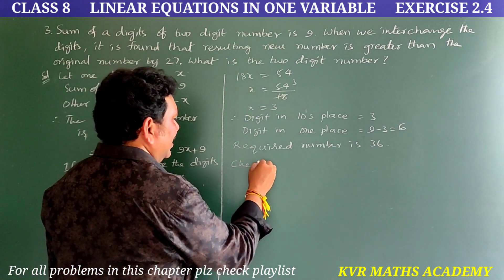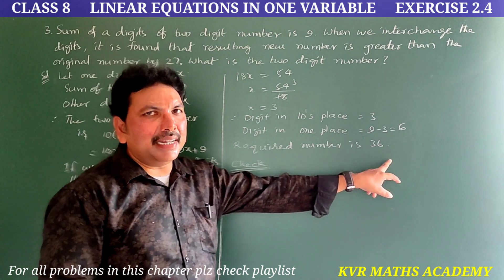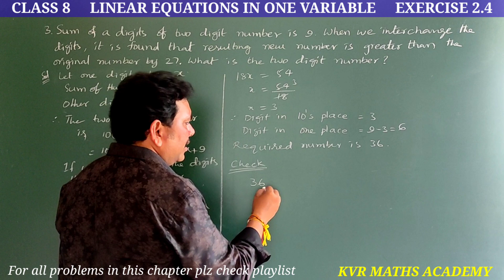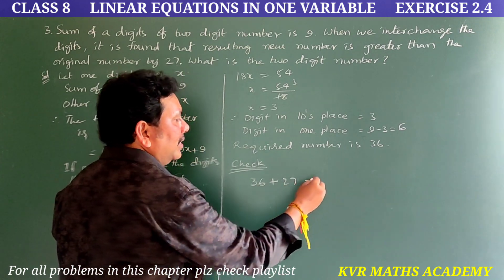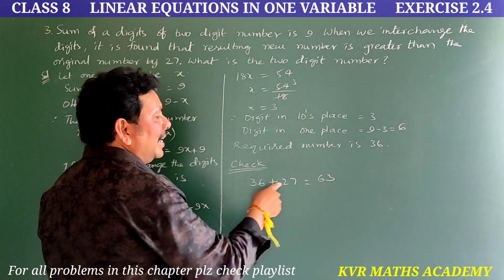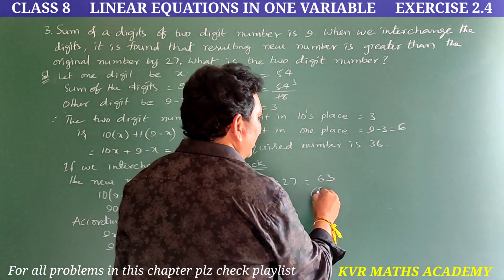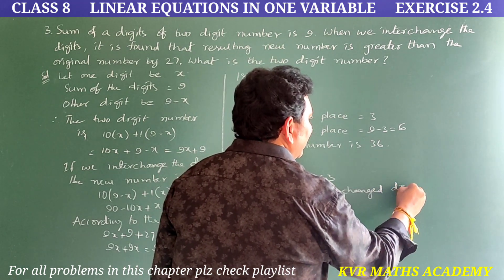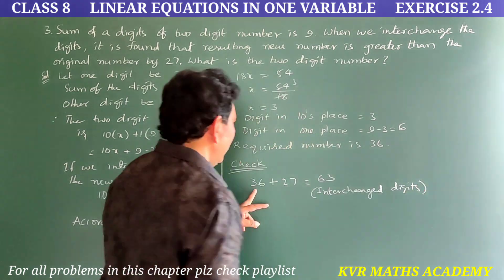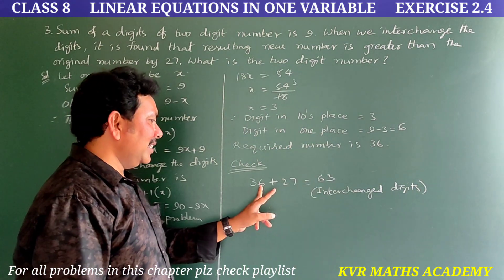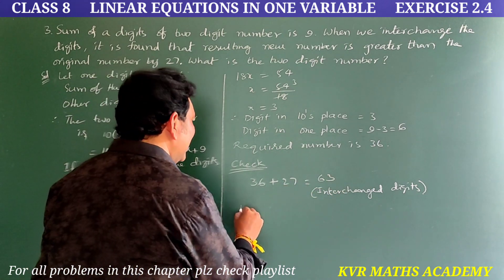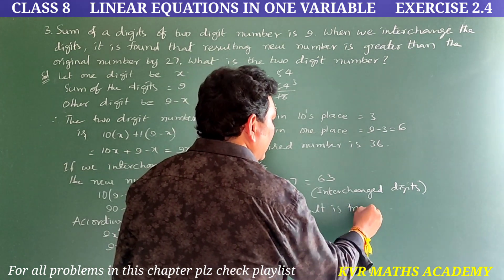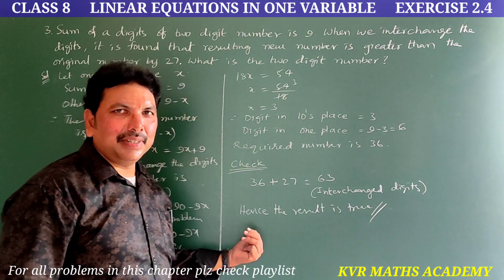Check: the number is 36. If we add 27 to 36, we get 63. The digits 3 and 6 are interchanged in 63, confirming the result. Hence the result is true. Note it down.